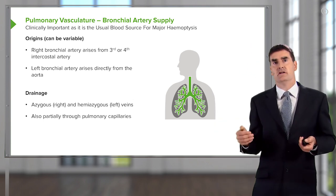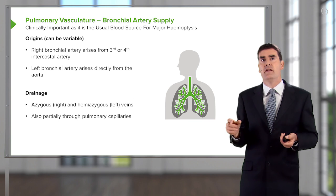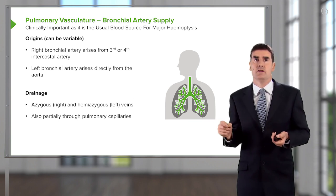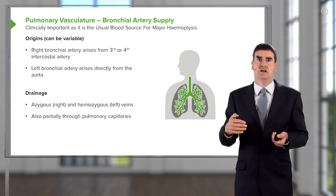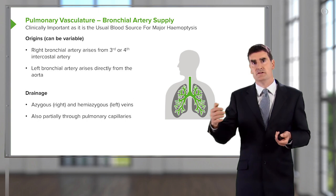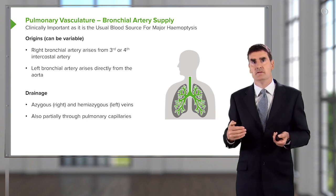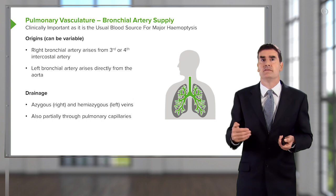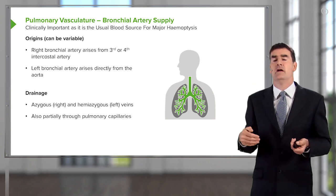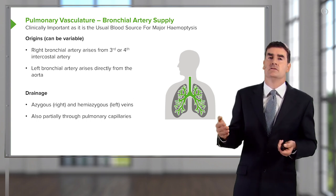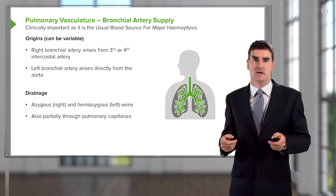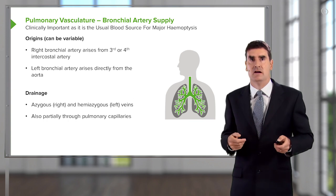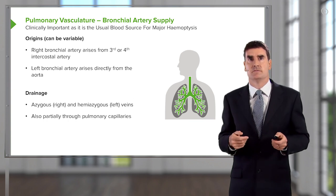That is essentially an anatomical physiological shunt where deoxygenated blood reaches the pulmonary venous circulation and reaches the left ventricle, but is actually physiologically not particularly relevant in most circumstances.